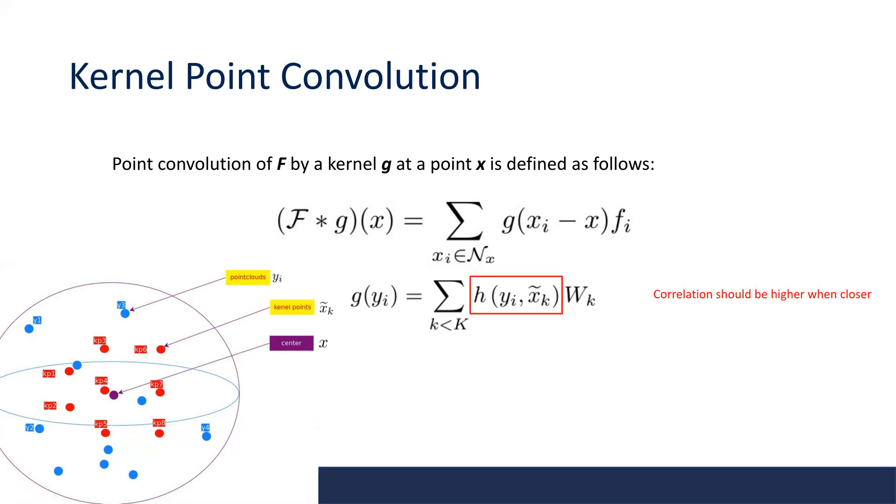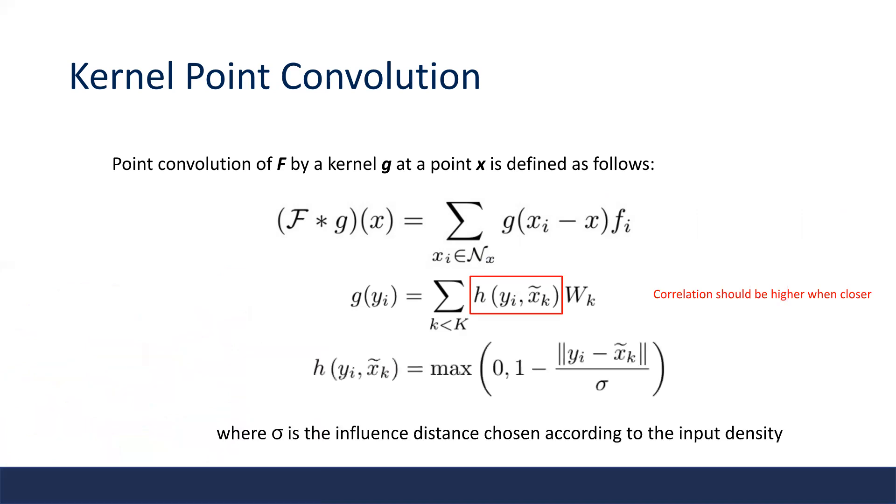The correlation function h, by intuition, should be higher when two points are closer. Therefore, it's defined simply as follows, which lies between 0 and 1, and increases as two points are closer in distance. Here, the sigma is a hyperparameter that is set according to the input point density.